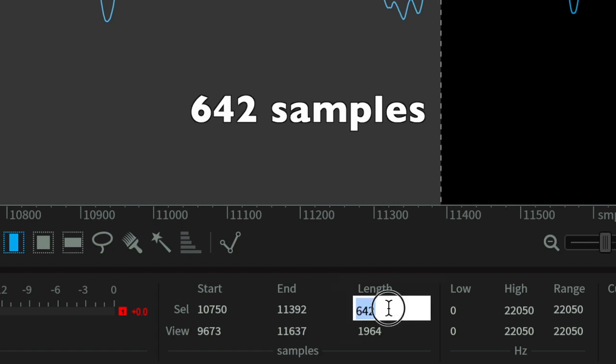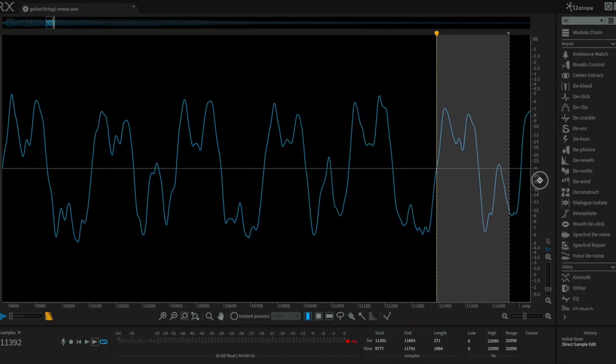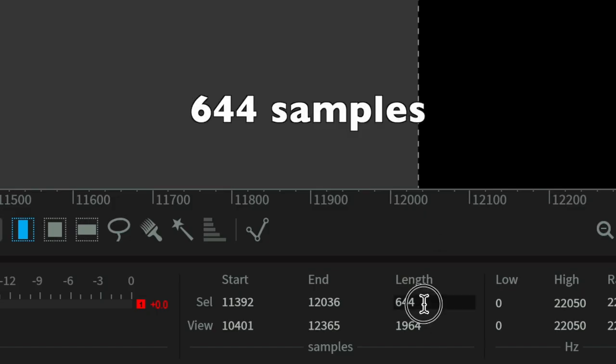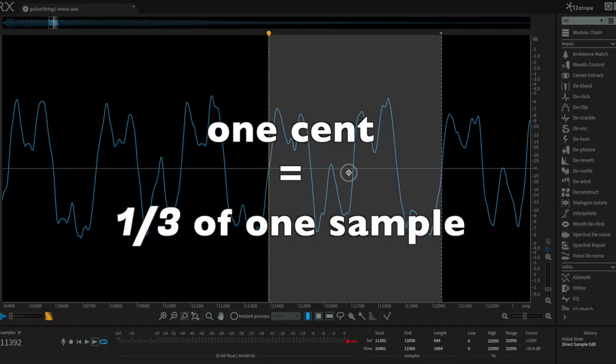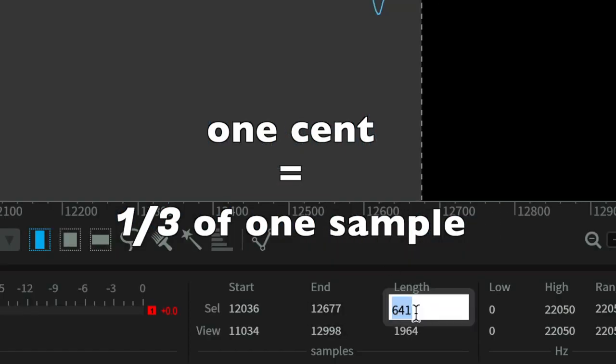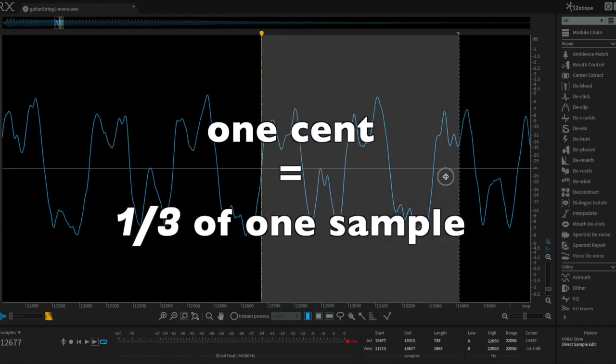What effect would this kind of change in wavelength have on a digital tuner? Well, for a note of this pitch, a one cent difference corresponds to a difference of about one third of one audio sample.